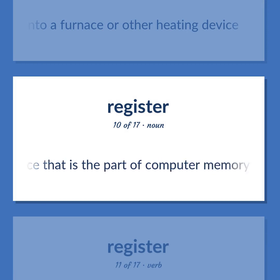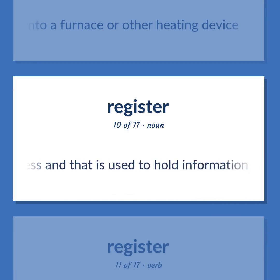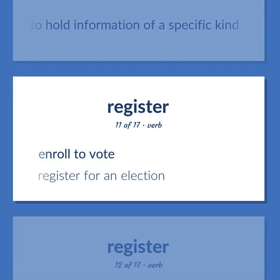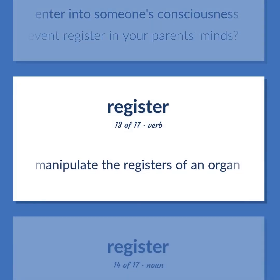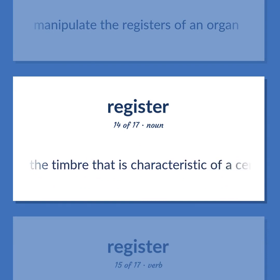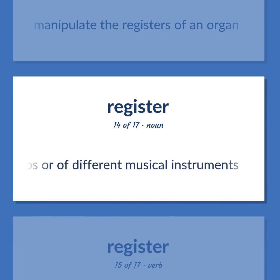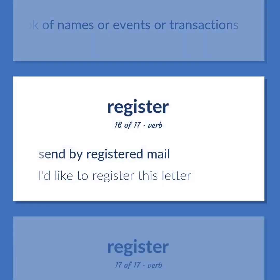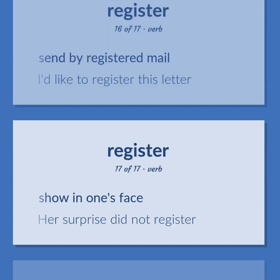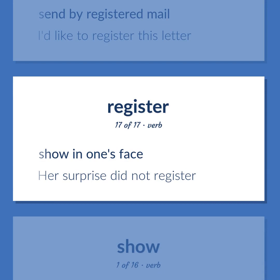Computer science: a memory device that is part of computer memory that has a specific address and is used to hold information of a specific kind. Enroll to vote; register for an election. Enter into someone's consciousness — did this event register in your parents' minds? Manipulate the registers of an organ. The timbre characteristic of a certain range and manner of production of the human voice, or of different pipe organ stops or musical instruments. Record in writing; enter into a book of names or events or transactions. Send by registered mail — I'd like to register this letter. Show in one's face — her surprise did not register.